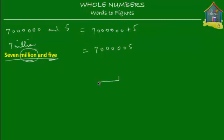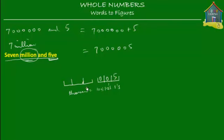Just think of place values and start from the right — the lowest three bits. For the lowest three bits you have five for the ones, zero for the tens, and zero for the hundreds. For the three bits of the thousands — one thousands, ten thousands, and hundred thousands — there is nothing, so they are all zeros, because there's no thousands in 'seven million and five.'